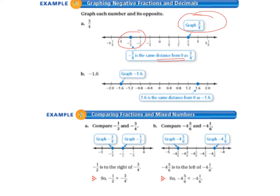Negative 1.6. We graph negative 1.6 to the left of 0, and 1.6 is the same distance from 0 — it's on the opposite side, on the right hand side.